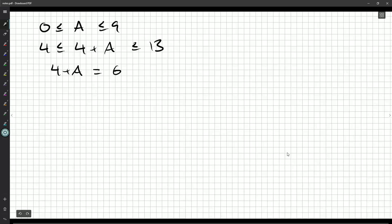So what are the multiples of 3 in this range? Well, 4 plus A could be 6, or 9, or 12. And then A could be 2 or 5 or 8. So those are the possible values for A.